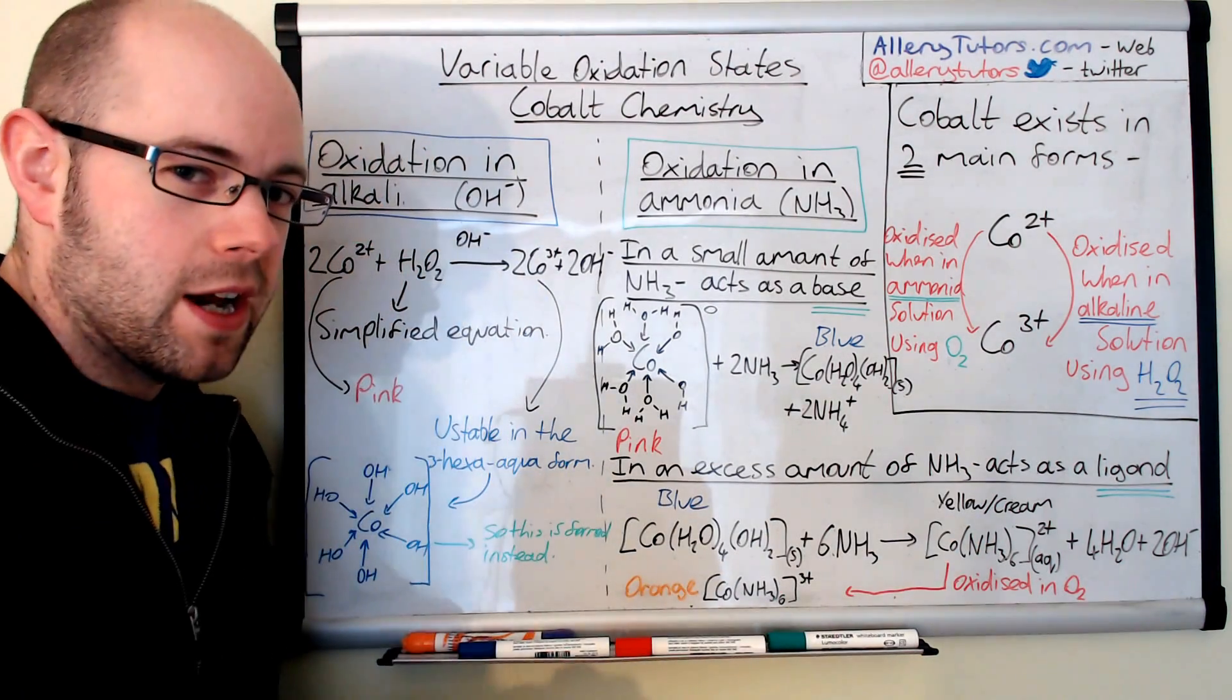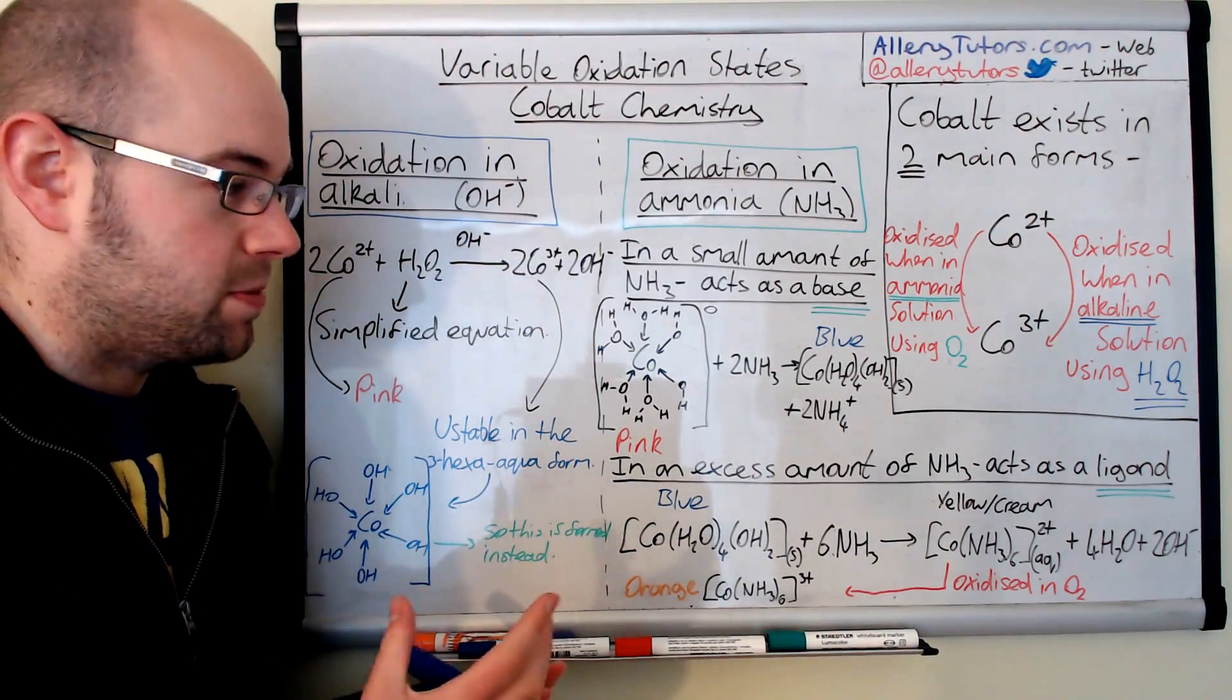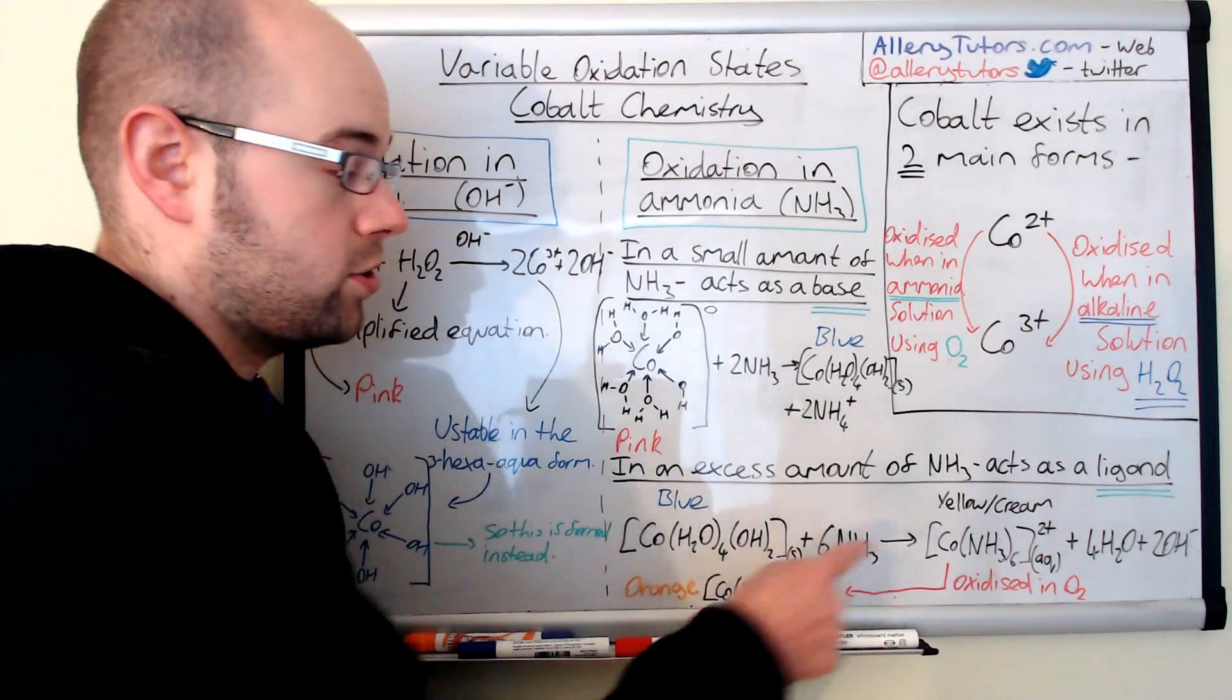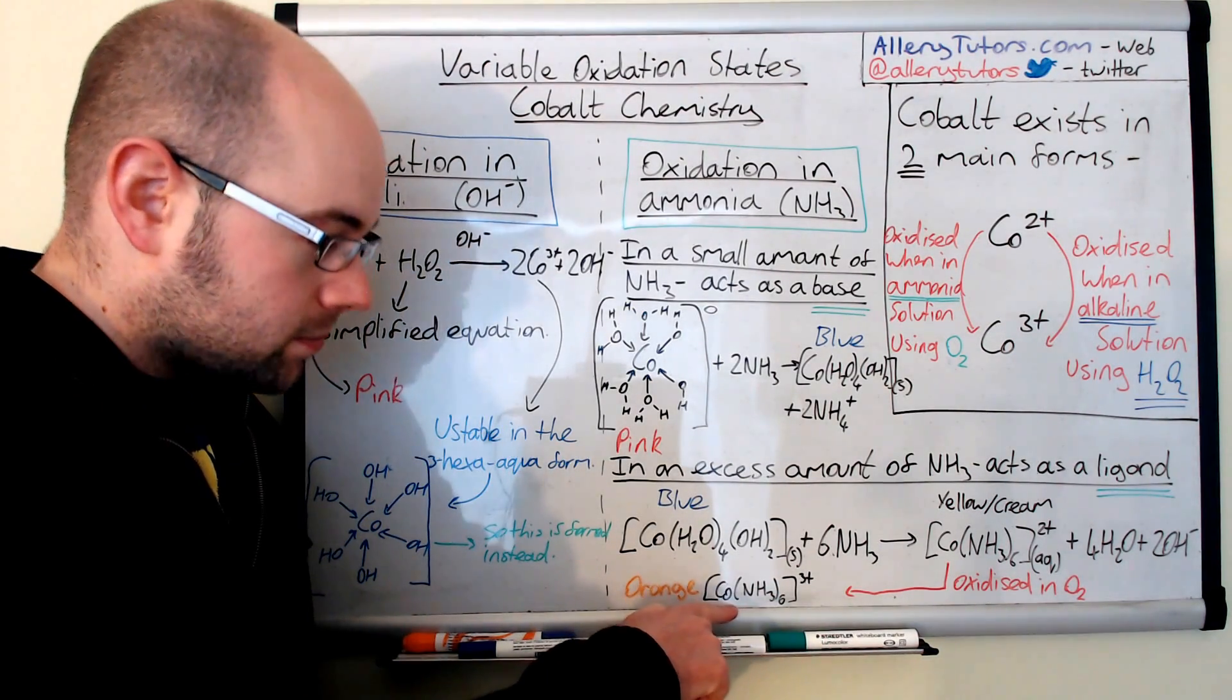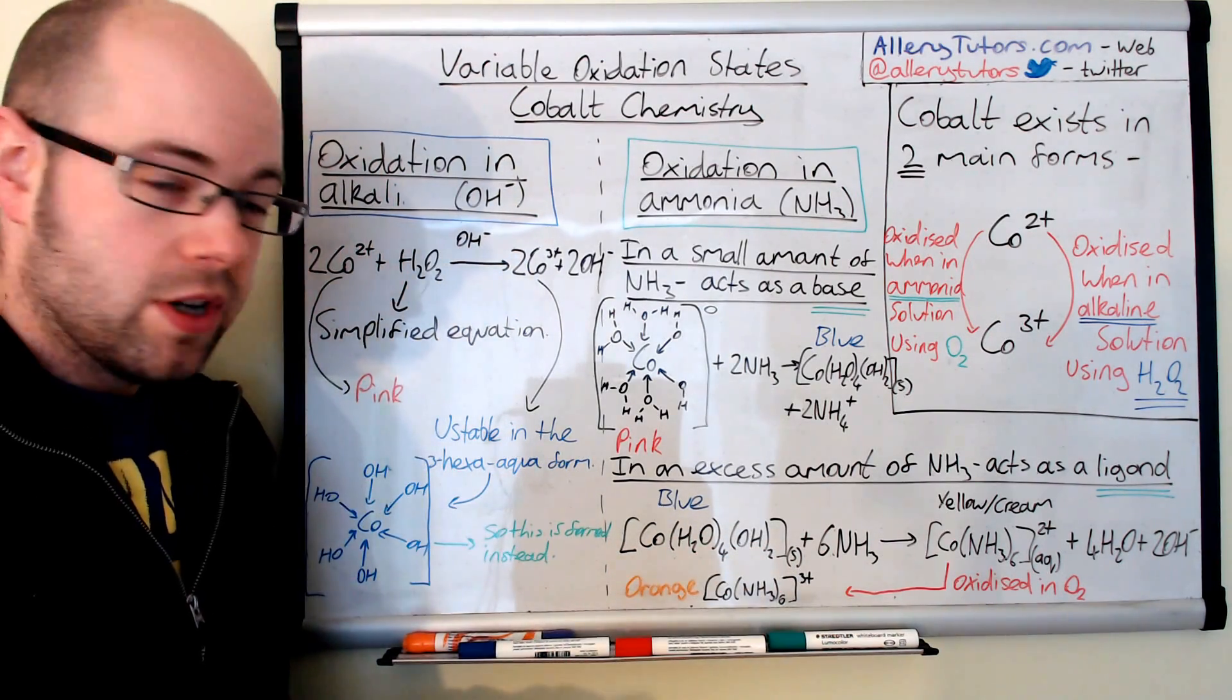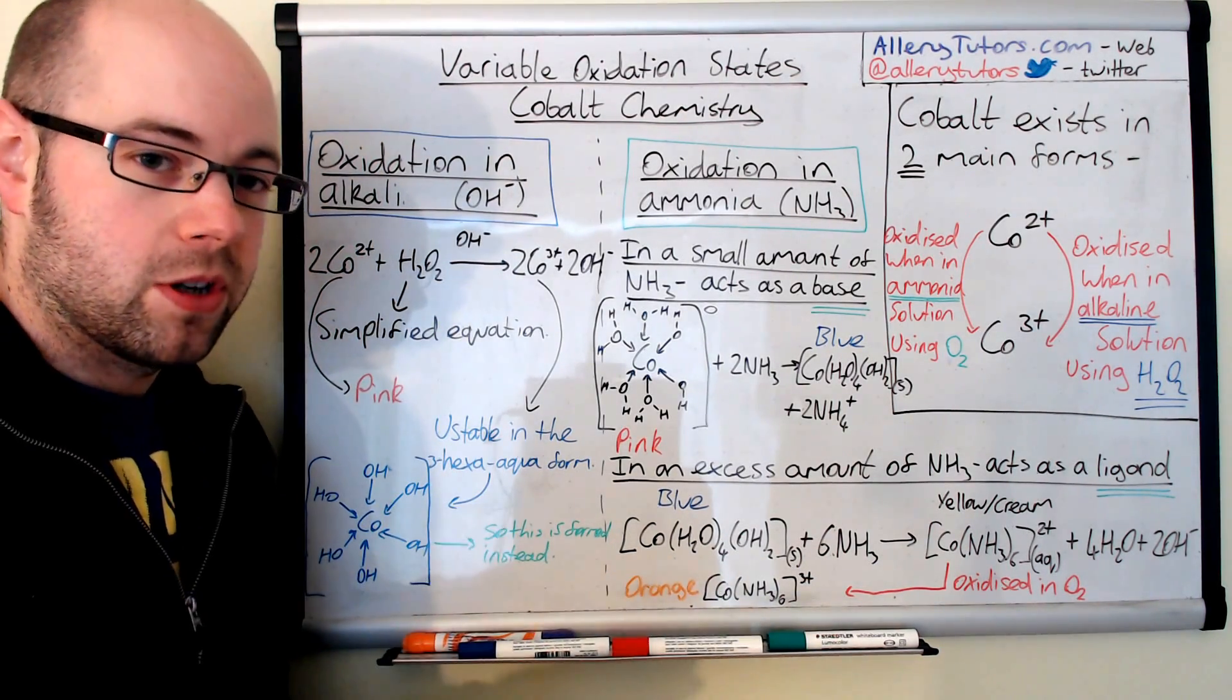But this is really, really unstable, and it doesn't exist in this form for very long. And just aerial oxidation, so this means that oxidation using oxygen just from the air is enough to actually oxidize this cobalt 2 plus complex into a cobalt 3 plus complex. And this is cobalt-hexa-ammonia complex, which is the name of this one. And this is an orange solution. Again, we know it's a solution because the complex is charged, and any charged complex will be soluble in solution. So, this might be yellowy-orange, it just depends on the color, but I would check with the exam board as to the exact color that they are expecting.